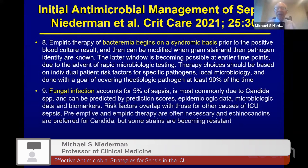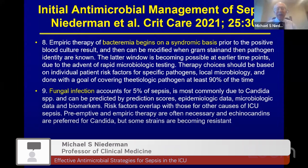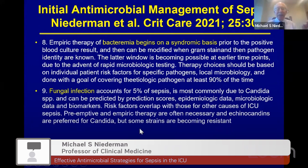For bacteremia, there is a syndromic approach based on whether a prior positive culture exists. Rapid diagnostic methods are increasingly identifying the etiologic pathogen and antimicrobial susceptibility much faster than in the past, allowing more rapid correct treatment. Fungal infection accounts for about 5% of all sepsis, most commonly due to candida, and can often be predicted by candida prediction scores, epidemiologic data, microbiologic information, and fungal biomarkers like galactomannan and beta-D-glucan. We are often forced to use preemptive and empiric antifungal therapy — echinocandins for candida — though candida resistance is increasingly a concern.